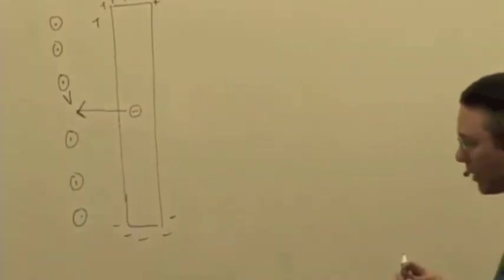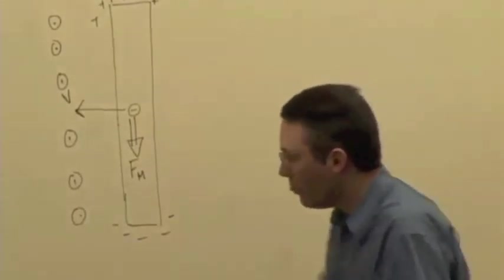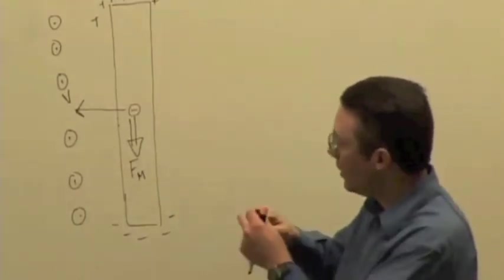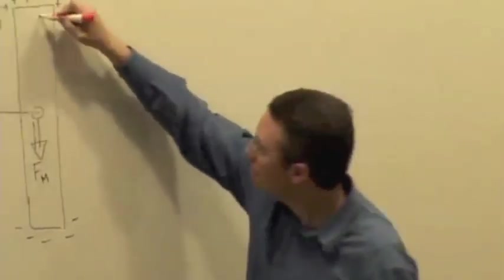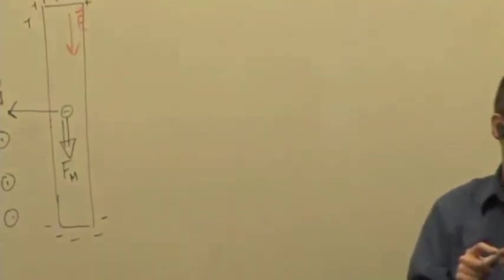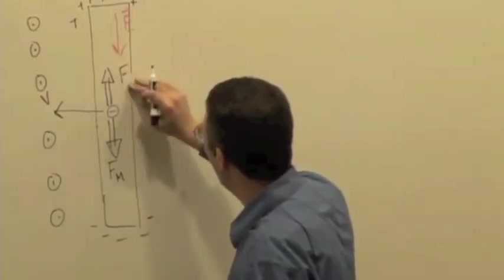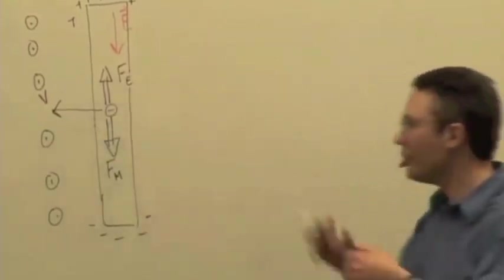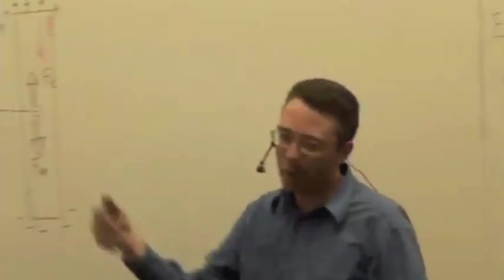Exactly. Just like the Hall effect and the velocity selector, we're going to get an electric force canceling out the magnetic force. We have the magnetic force downward, but because of this polarization, an electric field builds up — pointing downward. That electric field exerts an upward force on the negatively charged electrons. We reach a static equilibrium situation: even though we have a polarization, the two forces are balanced out.